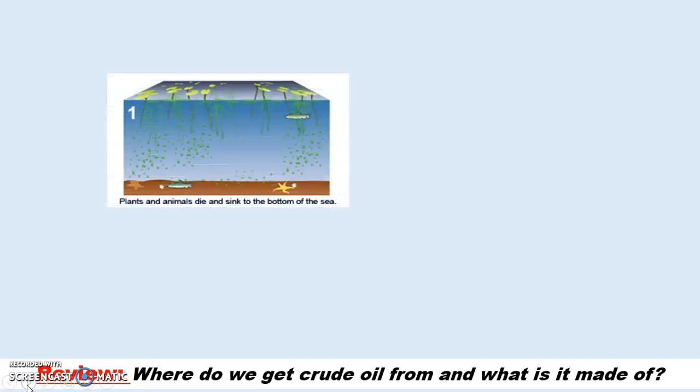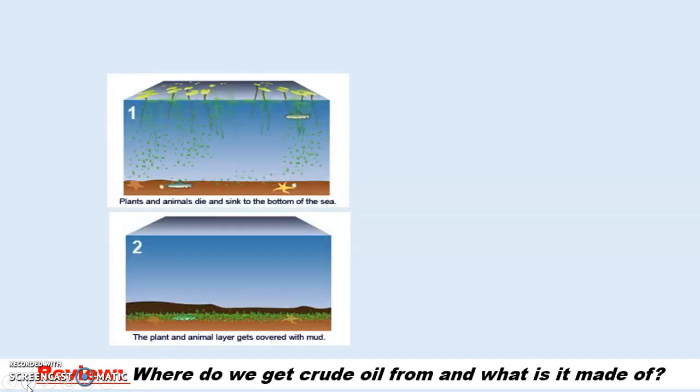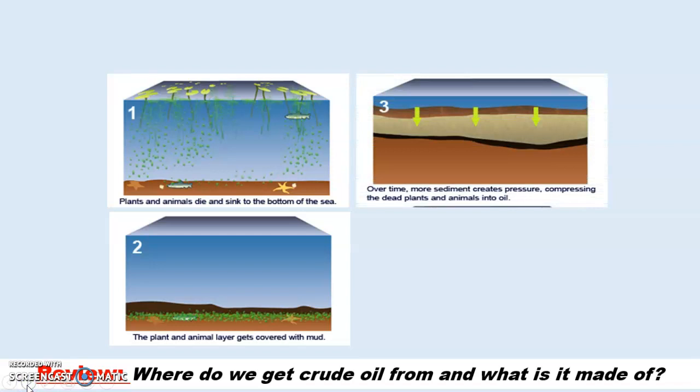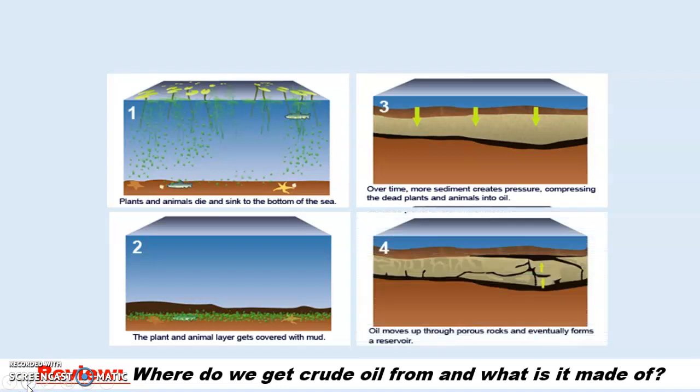How do we get crude oil? Crude oil is obtained from biomass—resources made from living or recently living creatures. This happens over billions of years where plants and animals sink to the bottom of the sea and get covered by sediment. Three things happen because of the build-up of sediment: high pressure, high temperature, and more importantly, absence of oxygen. Due to these three factors, the dead plants and animals get converted into crude oil which then rises up and eventually forms a reservoir.